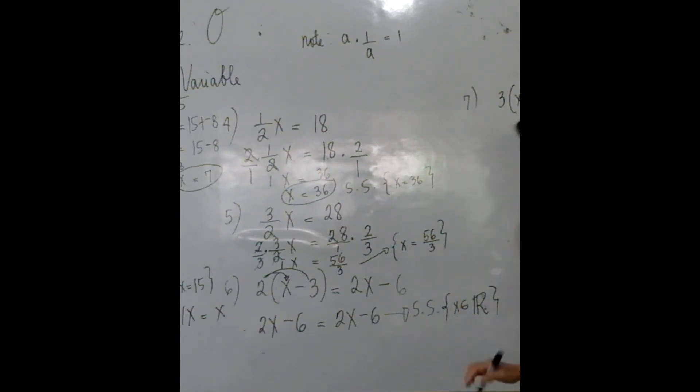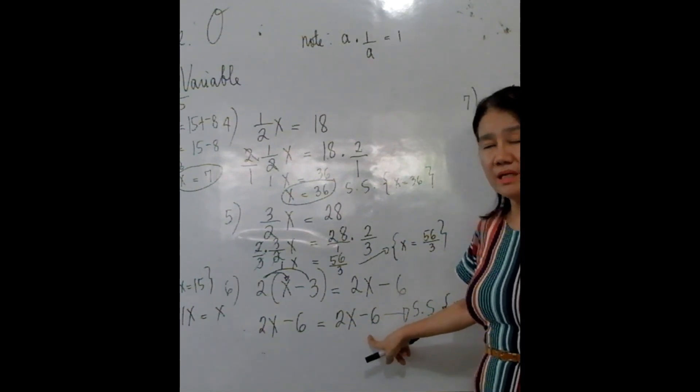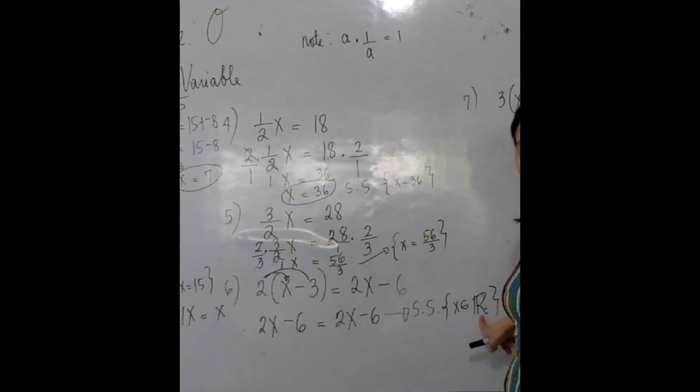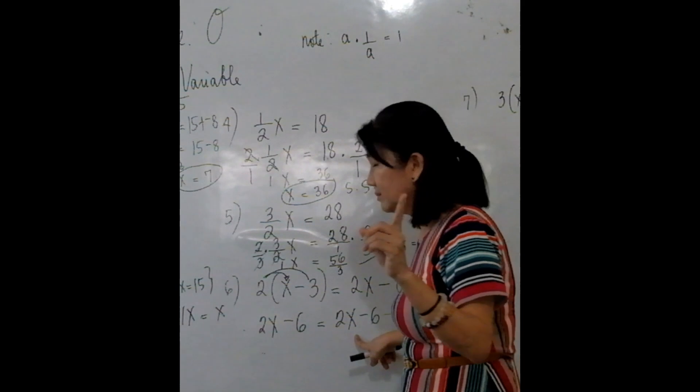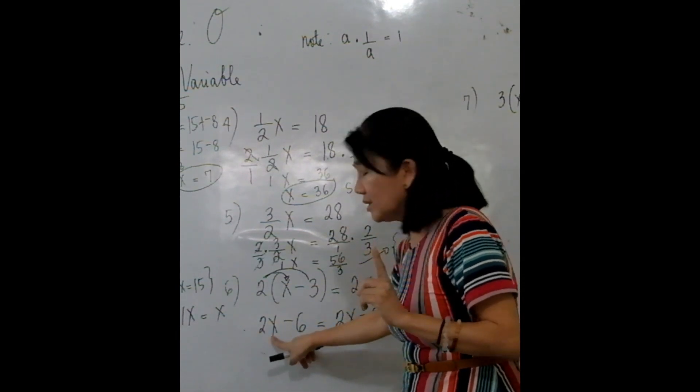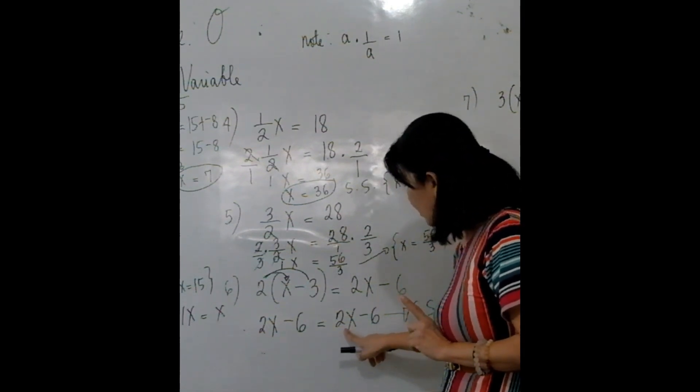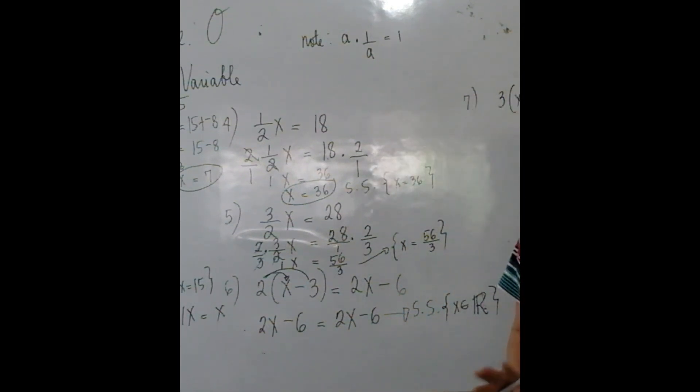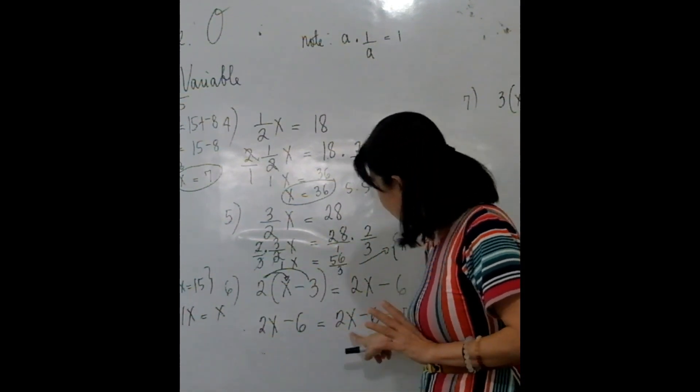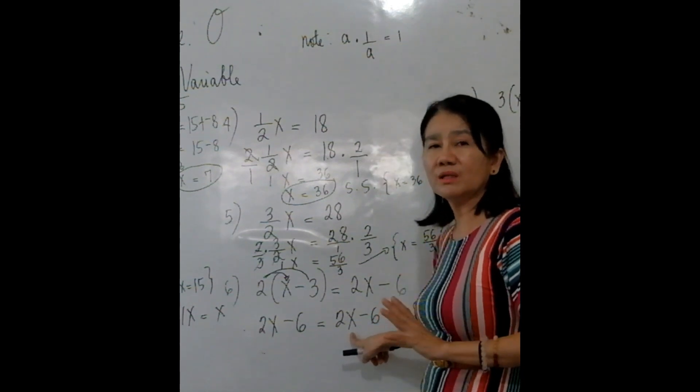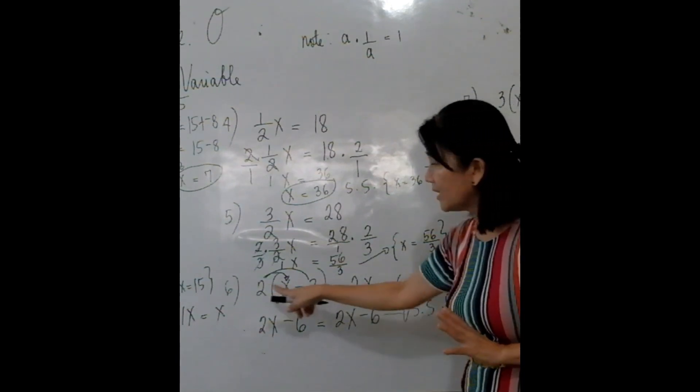Why? Because the left side and the right side are already equal. Meaning, any real number that you substitute to X will make it correct. Take for example 0: 2 times 0 is 0, 0 minus 6 is negative 6. It will still be equal to 0 minus 6. Any number that you would like, you think of any number, you substitute it here in X and you will see that the left side and the right side will always be equal because any real number will satisfy the equation.